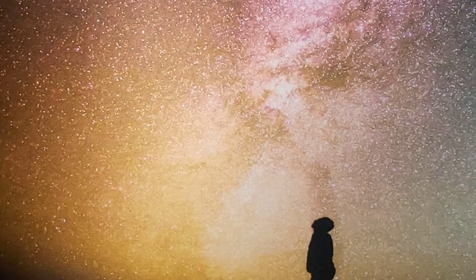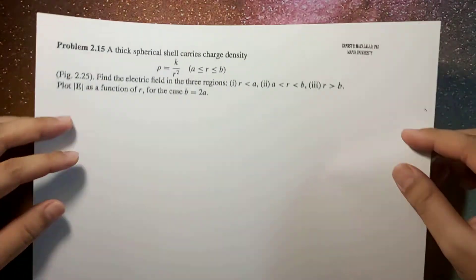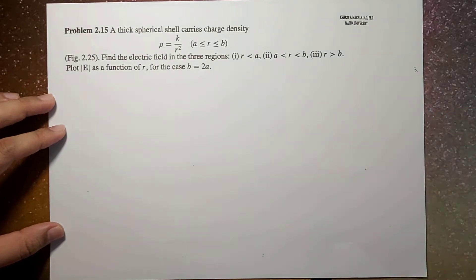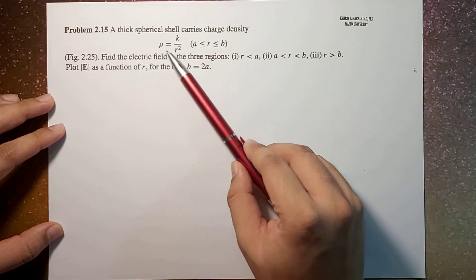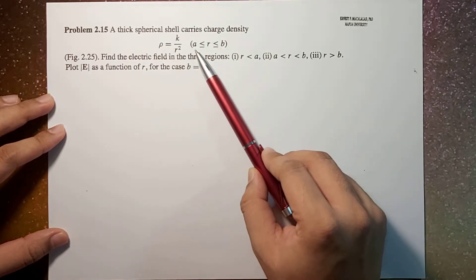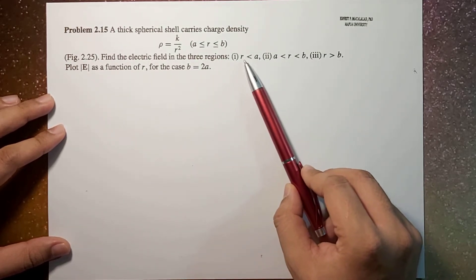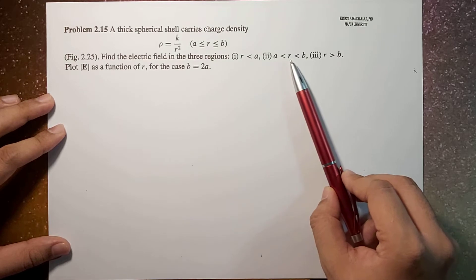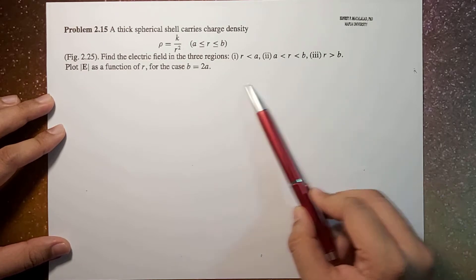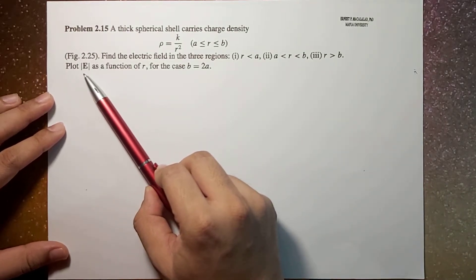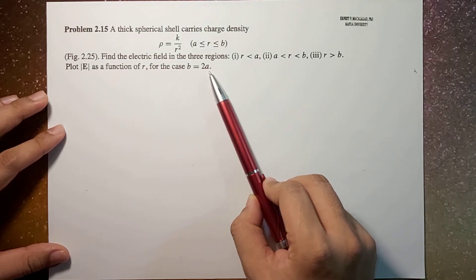What's up, guys? It's me, Sir Ernest, and today we're going to solve problem 2.15 of Griffith's 4th edition. The problem reads: a thick spherical shell carries charge density rho, which is equal to k over r squared, where r is between a and b. Find the electric field in the three regions: r less than a, r between a and b, and r greater than b. Then we're going to plot the magnitude of the electric field as a function of r for the case of b which is twice of a.